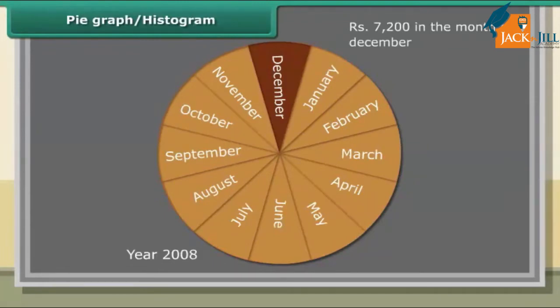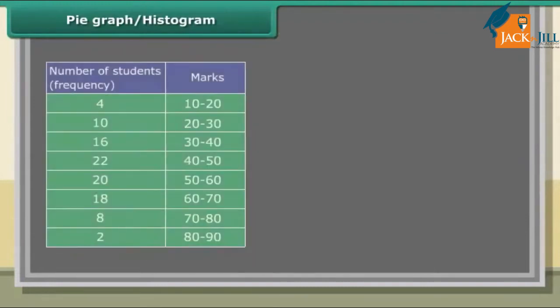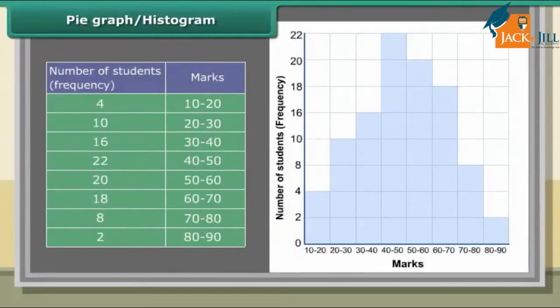Histogram: A histogram is a graphical representation of a frequency distribution in the form of rectangles with class intervals as bases and heights proportional to corresponding frequencies, such that there is no gap between any two successive rectangles. The following table gives the marks scored by 100 students in an entrance examination.